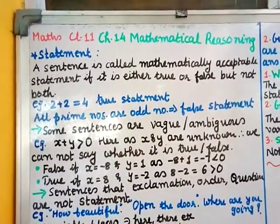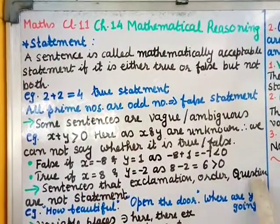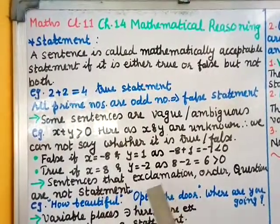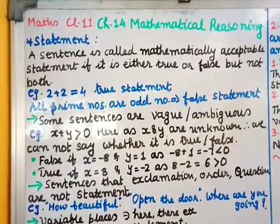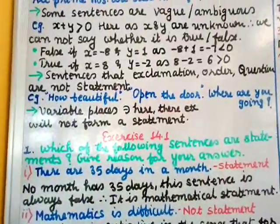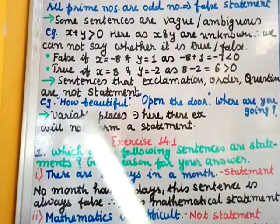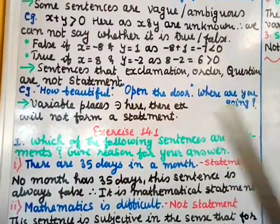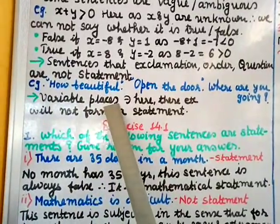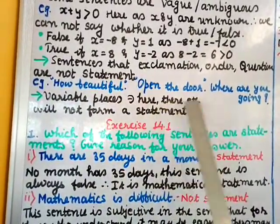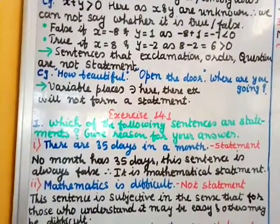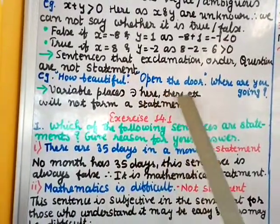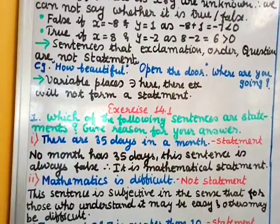Sentences that are exclamations, orders, or questions are not statements. For example, 'How beautiful this is!' — exclamation, not a statement. 'Open the door' — this is an order, not a statement. 'Where are you going?' — this is a question, not a statement. Also, sentences using variable places such as 'here' or 'there' cannot be called statements — if a particular place is given it may qualify, but with variable places it can only be called a sentence, not a statement.